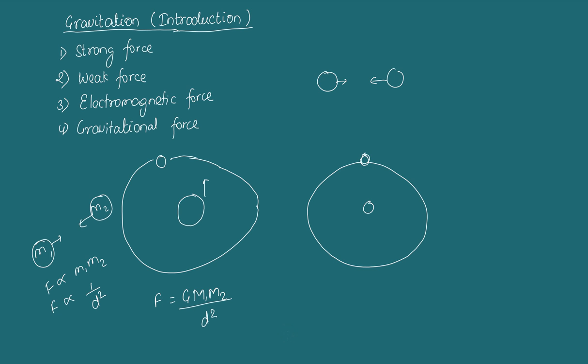The universal gravitational constant G does not depend on mass. Its value does not change regardless of the mass of the bodies involved, and it remains constant on Earth.